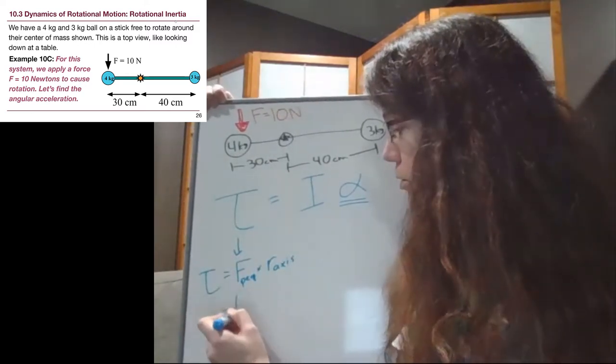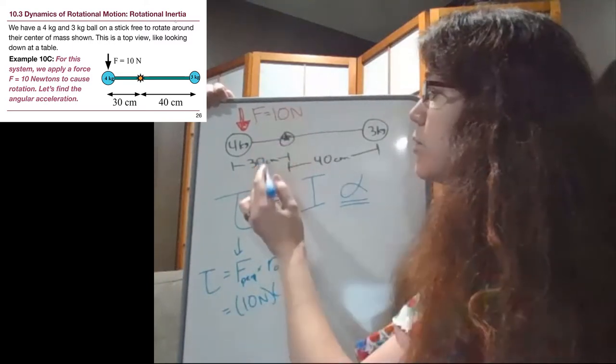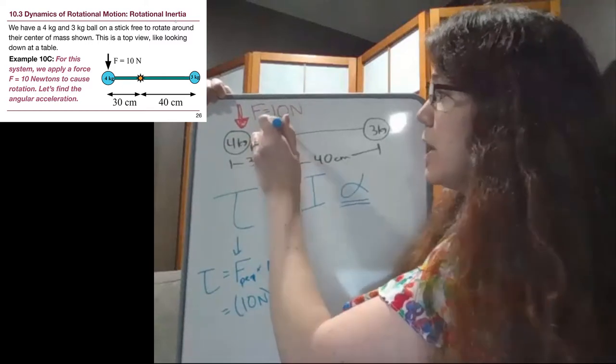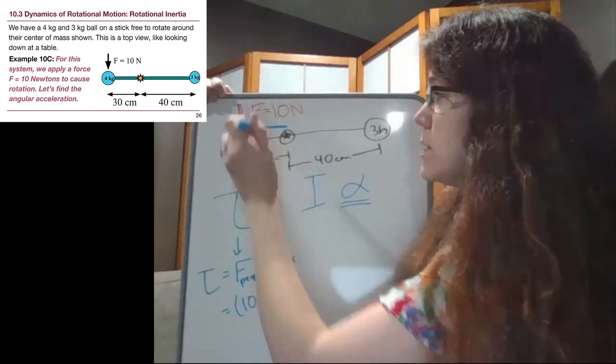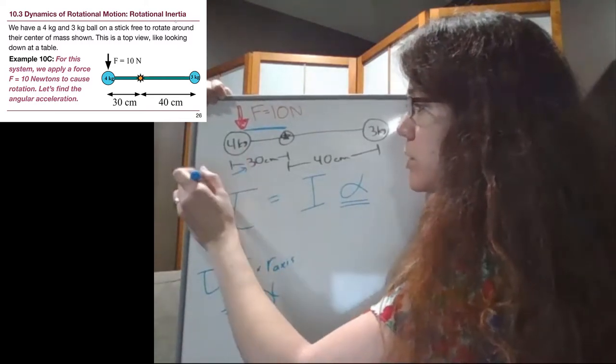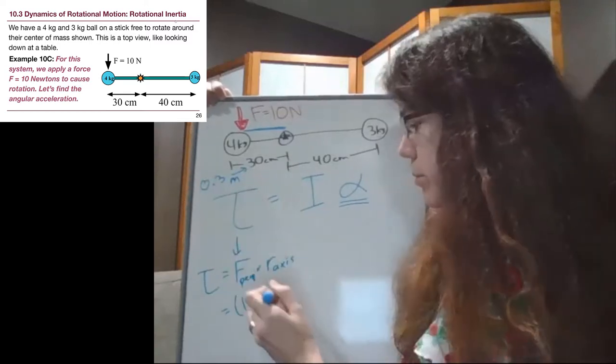So we have our 10 newton force, and that 10 newton force is acting on this 4 kilogram mass. This is the perpendicular distance to the axis, the 30 centimeters. But we can't use centimeters in our problem solving, we have to divide by 100, so that's 0.3 meters.